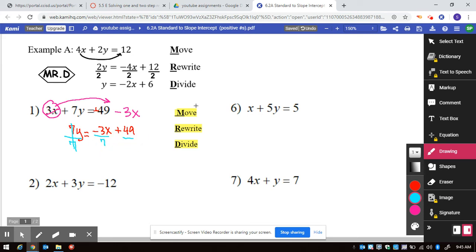So now this is y is equal to negative 3 over 7x, and then 49 divided by 7, that actually reduces to plus 7.